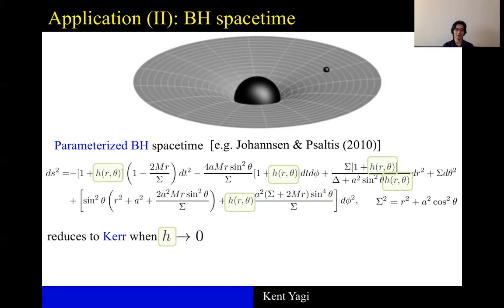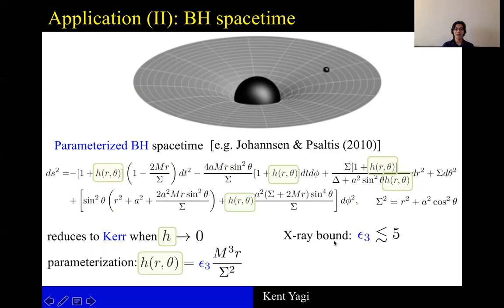You can expand this h about r equals infinity and just consider the leading part with some coefficient epsilon 3 that captures the deviation away from Kerr metric. If you set epsilon 3 to 0, then you reduce to Kerr black hole in GR.